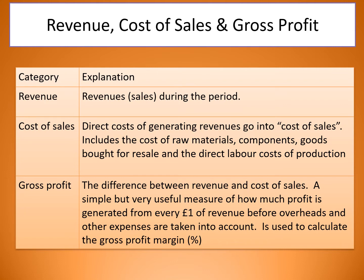Revenue is sales during the period. Cost of sales covers direct costs of generating revenues — things like raw materials, components, goods purchased for resale, and direct labour costs of production such as commission. That gives us gross profit — the difference between revenue and cost of sales — a simple but very useful measure of how profit is generated from every £1 of revenue before overheads, and it's used to calculate the gross profit margin.